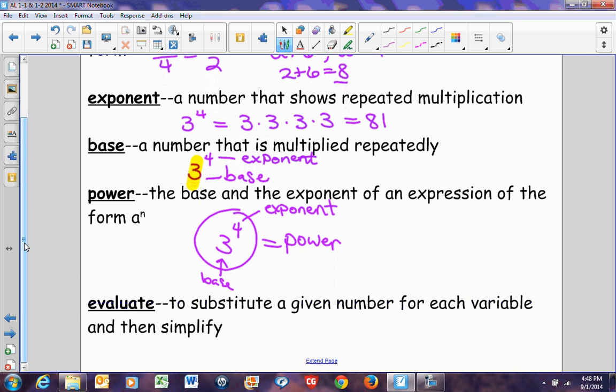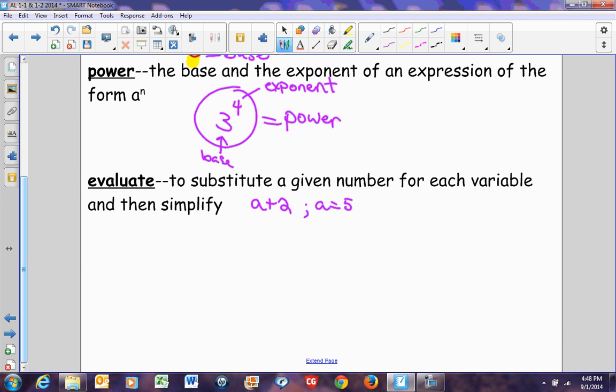So to evaluate, you're simply going to substitute a given number in for a variable and then simplify. Like I did in your first example. I have a plus 2 and I tell you that a is going to equal 5. We're simply going to place 5 into this equation. We have 5 plus 2 and that equals 7. That is evaluating. It's also sometimes referred to as simplifying.